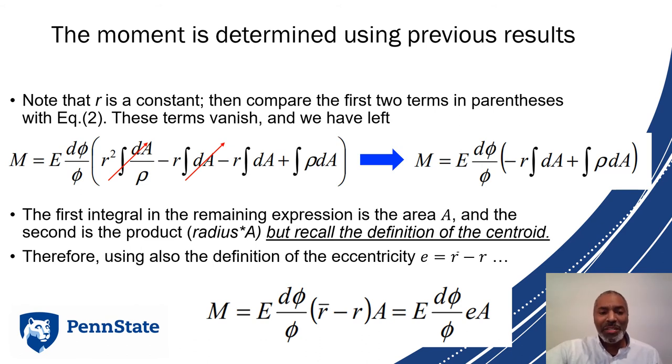In the remaining expression, the first integral is the area A, and the second is the product of radius A. We can make a substitution using the definition of a centroid. And we can use the definition of the eccentricity, which is r bar minus r. We end up with the expression M equals E d phi over phi times r bar minus r times A, which equals E d phi over phi e A.